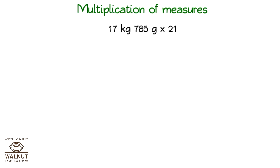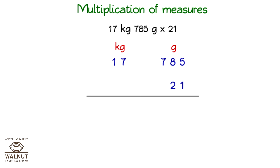Multiplication of Measures. We write the units, and below that we write the measures. Then we get ready to multiply. Look at the unit under Grams — we can see that we have to adjust it. We know that 1000 grams is equal to 1 kg.